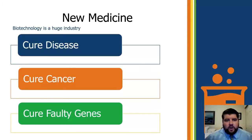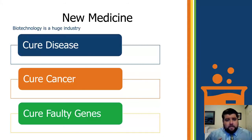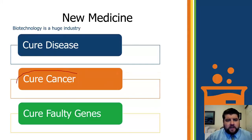For students interested in new medicine or becoming medical doctors, think about the implications this has for their careers. Biotechnology is a huge industry — it's going to be able to cure disease, cure cancer, and ultimately cure the faulty genes which cause a lot of genetic abnormalities. This is bigger than stem cells, and stem cell technologies can still be integrated within CRISPR-Cas9. The cure for cancer could be CRISPR-Cas9.